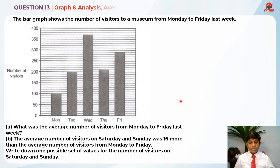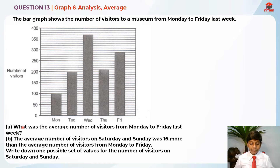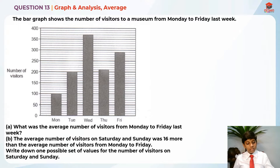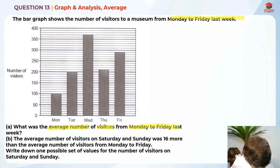Question 13 is testing us on graphs and analysis, and also on average. Let's read the question for Part A. The bar graph shows the number of visitors to a museum from Monday to Friday last week. What was the average number of visitors from Monday to Friday last week? So they're asking us what is the average number of visitors from Monday to Friday last week.